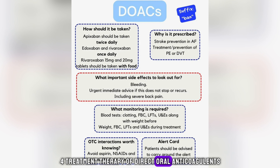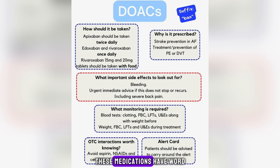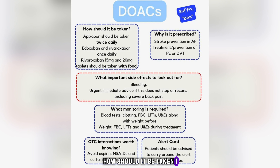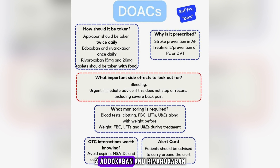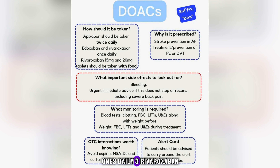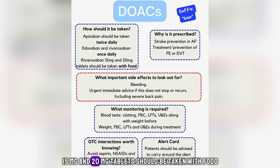Treatment therapy of direct oral anticoagulants. These medications have 'xaban' at the end of their generic names. How should it be taken? 1. Apixaban should be taken twice daily. 2. Edoxaban and rivaroxaban once daily. 3. Rivaroxaban 15 mg and 20 mg tablets should be taken with food.